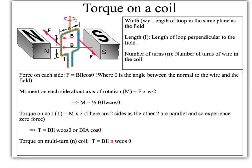To recap from last time, we left off with F equals BIL cosθ, where θ is the angle between the normal to the wire and the field. We can see in examples like this, where you've got wires in two different directions, using the normal is much more advantageous as the normal is the same for both of them. Obviously the angle of the wire is different for the two wires on the sides of the coil.